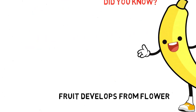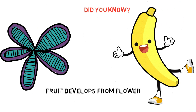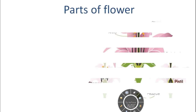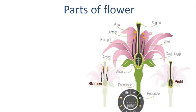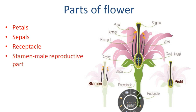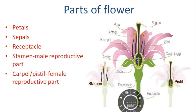Did you know that fruit develops from a flower? A flower has different parts: it has the petals, the sepals, the receptacle, the stamen which is the male reproductive part, the pistil which is the female reproductive part, and the peduncle on which the flower is borne.